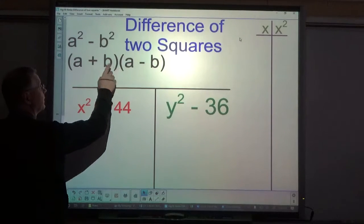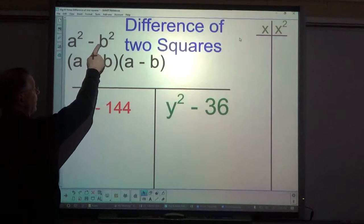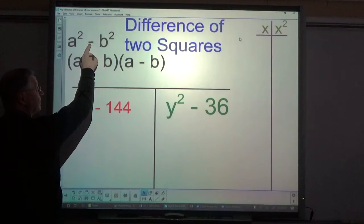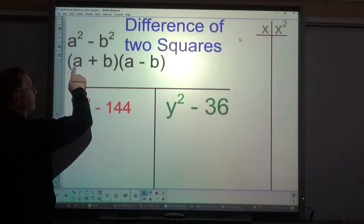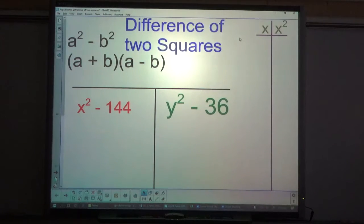Now with difference of two squares, the formula for factoring a squared minus b squared, it has to be a minus, is a plus b times a minus b. That's how you factor it.